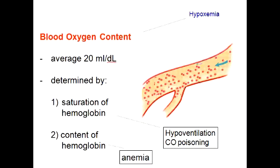How do you determine the oxygen content of the blood? Oxygen content of blood is the oxygen binding capacity times the percent saturation, plus the dissolved oxygen. To remember this, just remember that oxygen in the blood only exists in two forms: it's either bound to hemoglobin or dissolved.